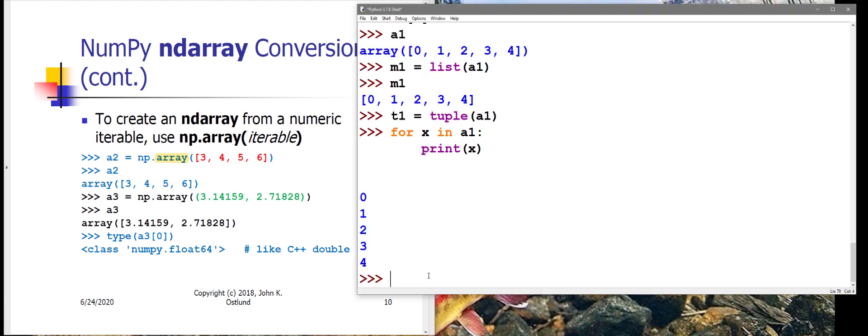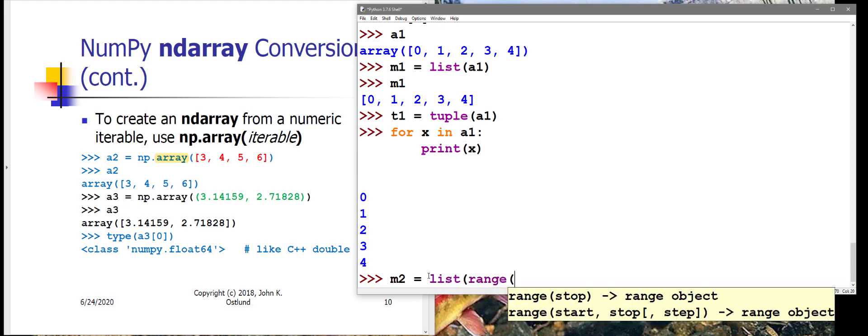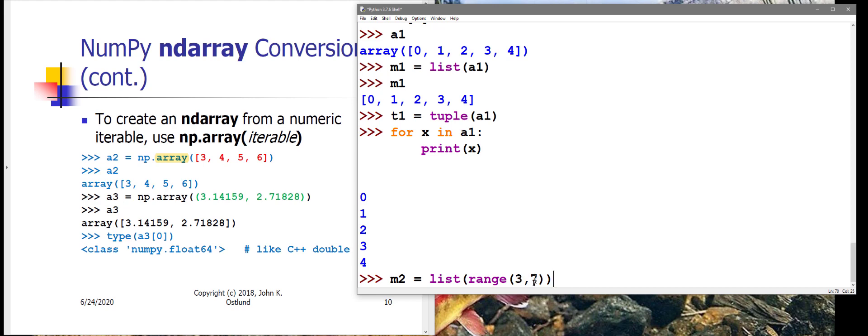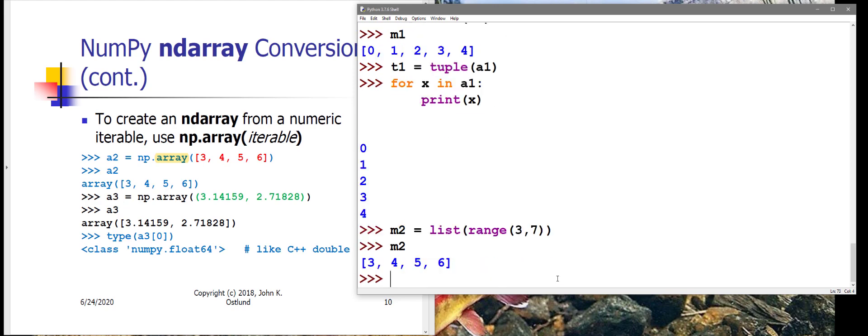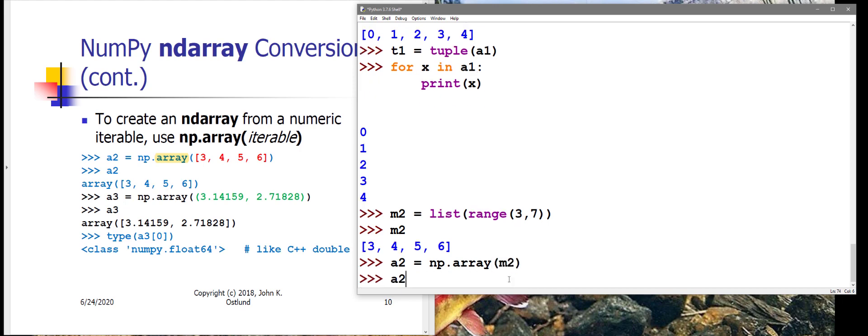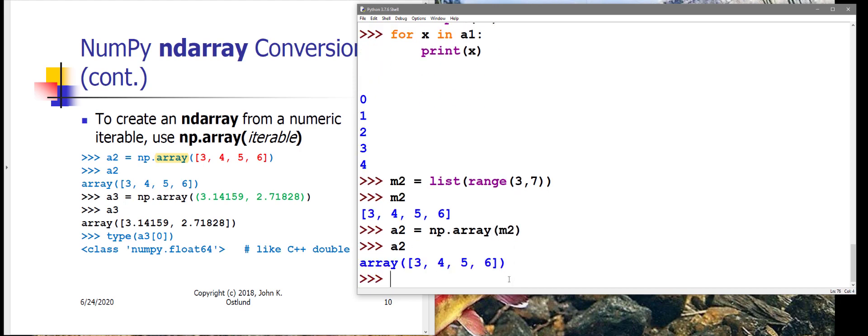I can go the other direction using pretty much any numeric iterable to create an ndarray. If I have a list, let's say M2 gets a list from range(3, 7). Now 3, 7 means starting from item values of 3 up to but not including item values of 7. So M2 now contains 3, 4, 5, 6. Here I'm creating an ndarray called A2 using the array construction or conversion function within the numpy module. I give M2 as my iterable, and now I have an ndarray containing 3, 4, 5, 6.